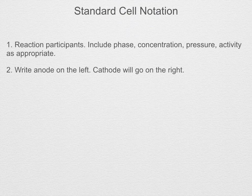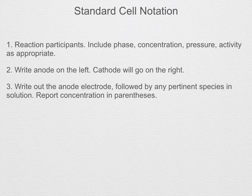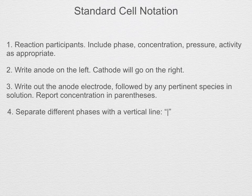The anode where oxidation occurs is on the left while the cathode is on the right. Write out the anode electrode followed by the pertinent species that are in the solution. If there are several species in the solution, separate them with a comma.